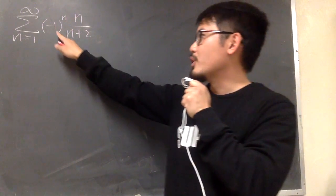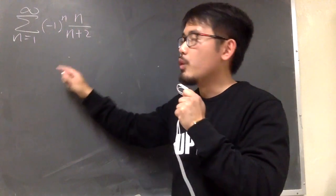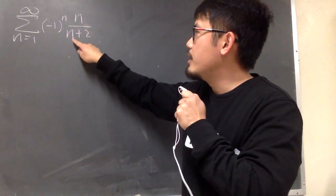This is alternating because we have this factor, negative 1 in the parentheses to the nth power. And then for this part, we see that for this, n over n plus 2.